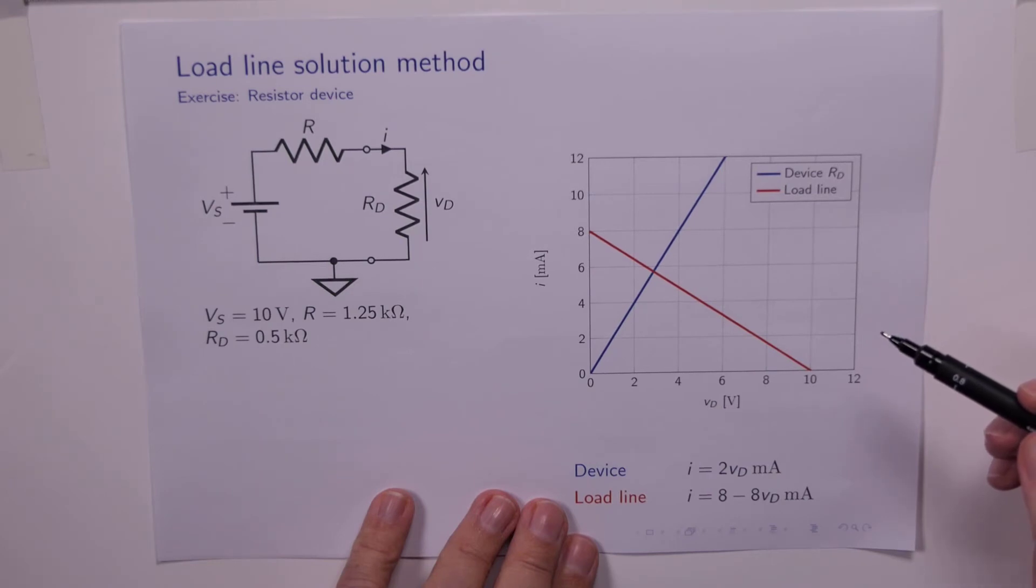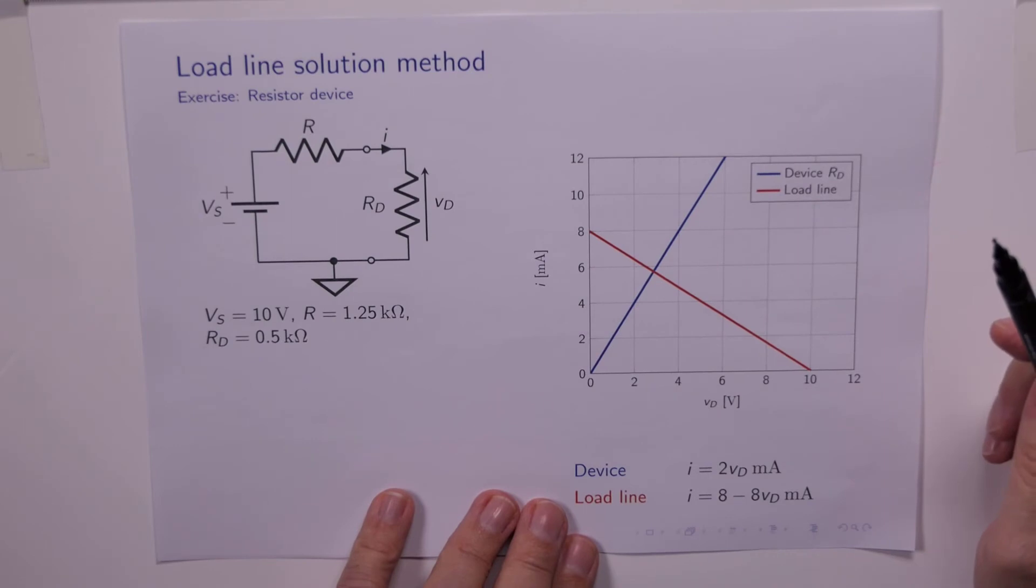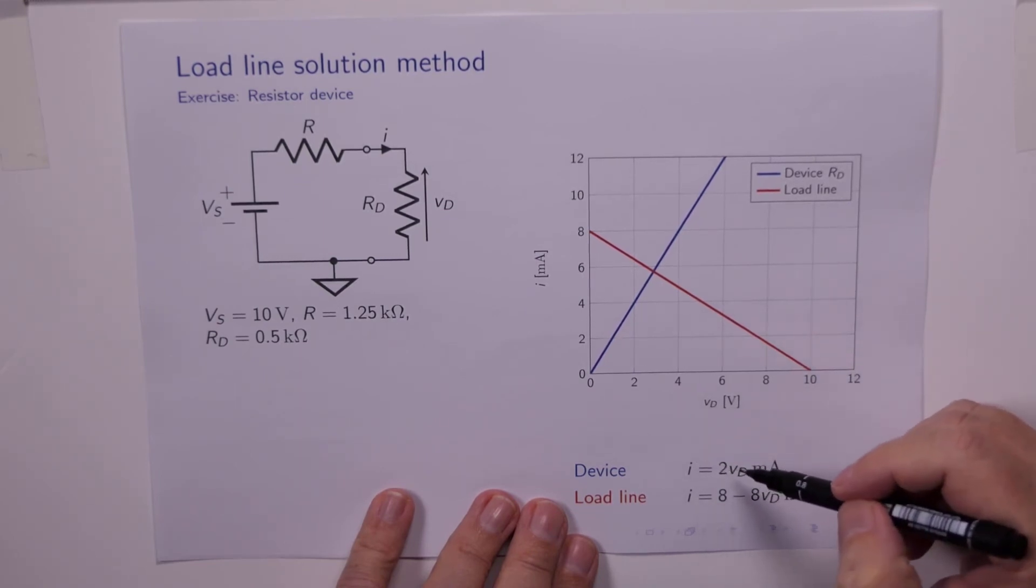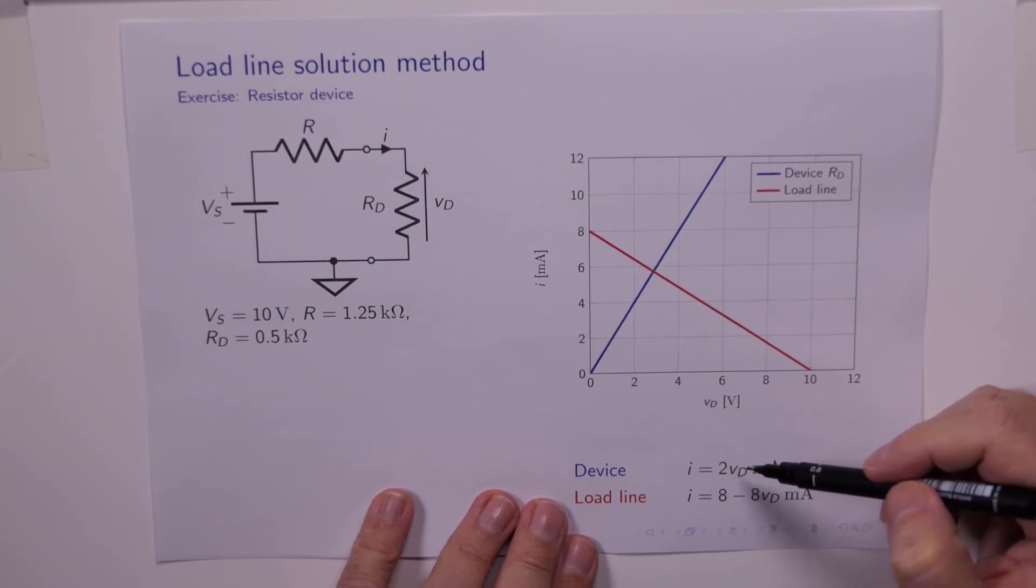We also can very easily figure out the device characteristic for the resistor, Rd. Rd is equal to 0.5 kΩ, and so obviously the device characteristic is going to be I equals 2Vd. Why? Because the current is equal to Vd divided by Rd. Rd is 0.5, so 1 over 0.5 is 2.